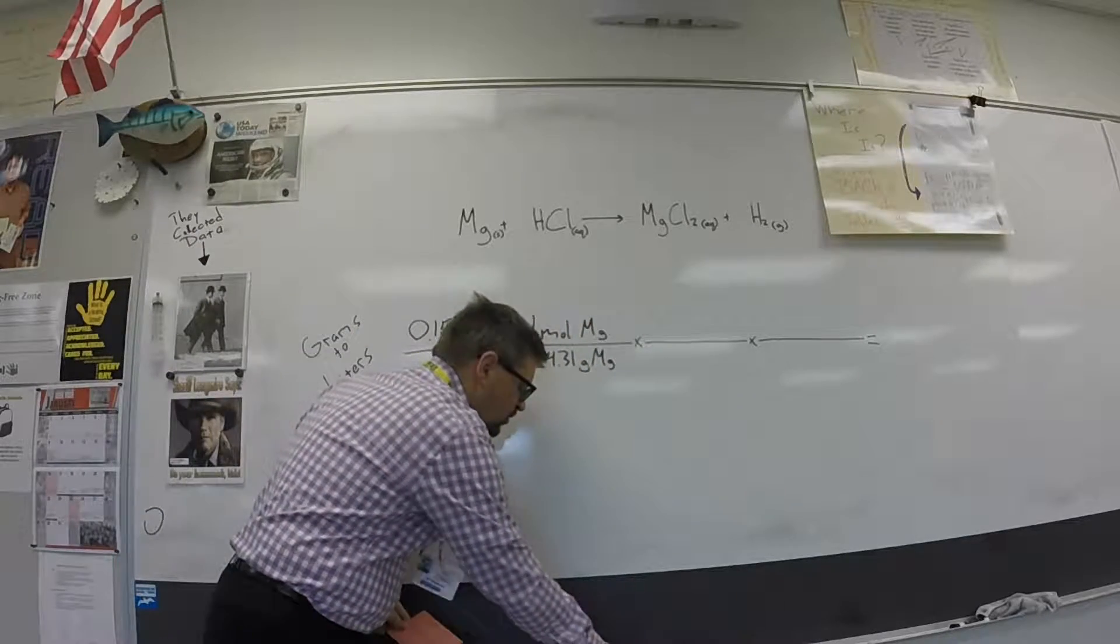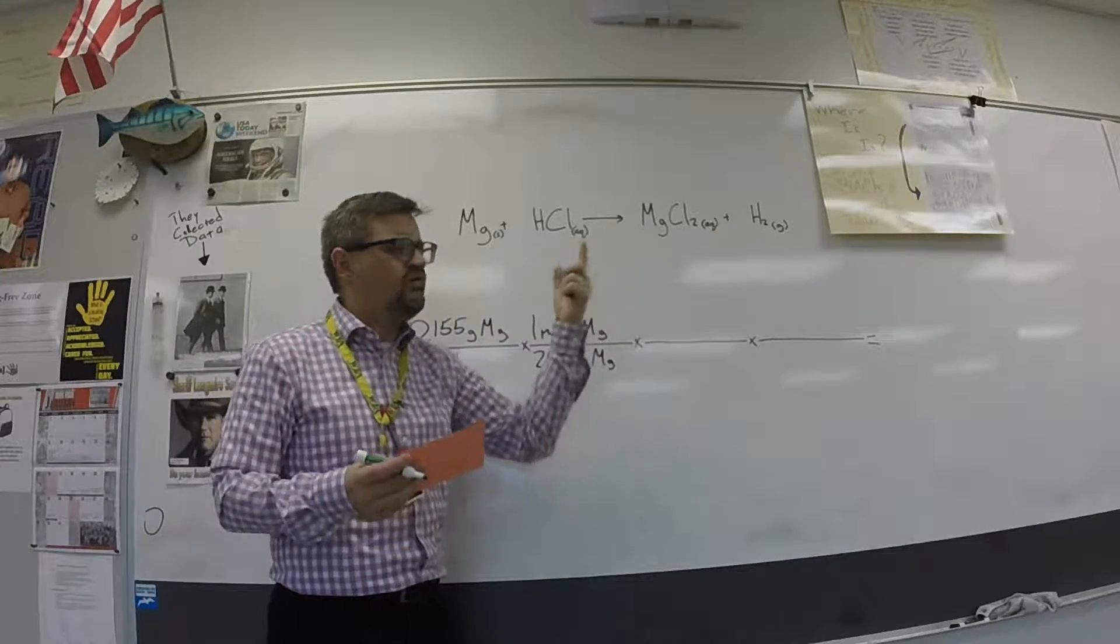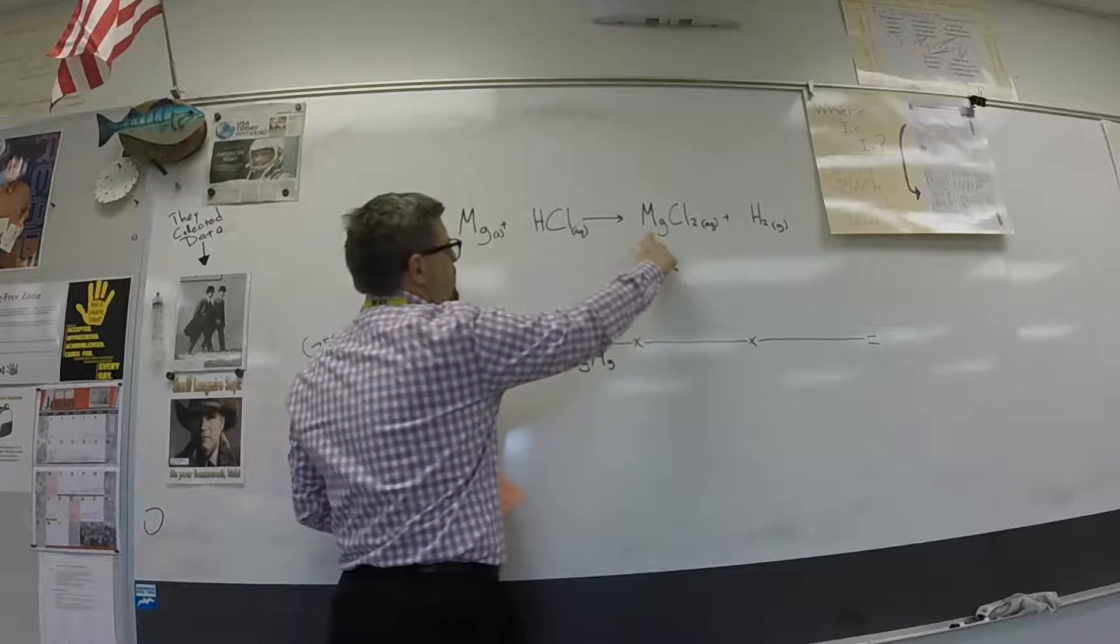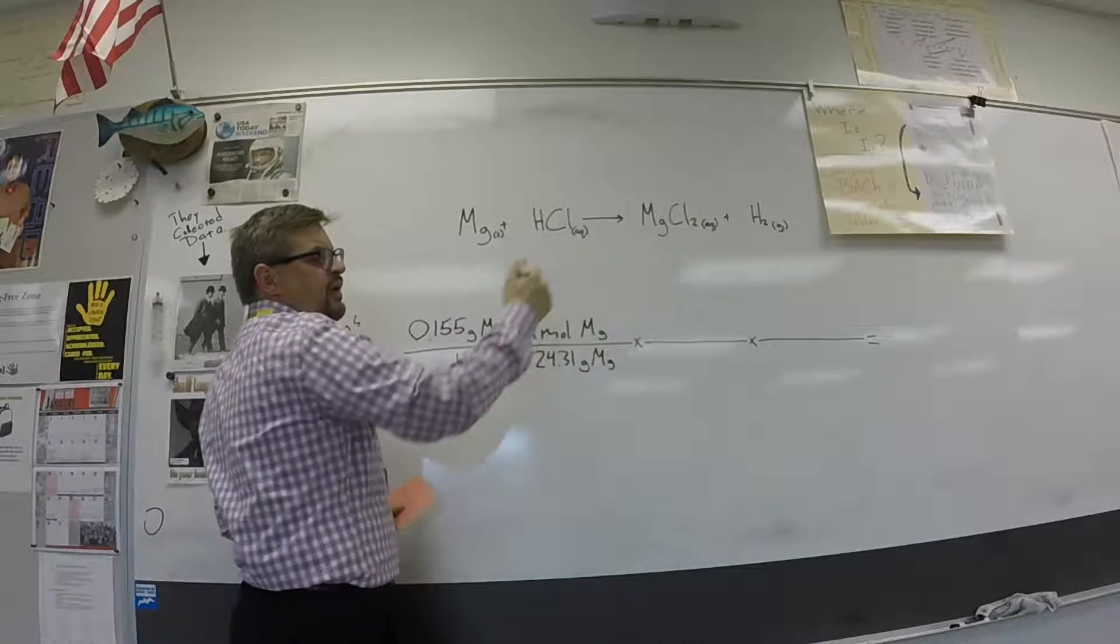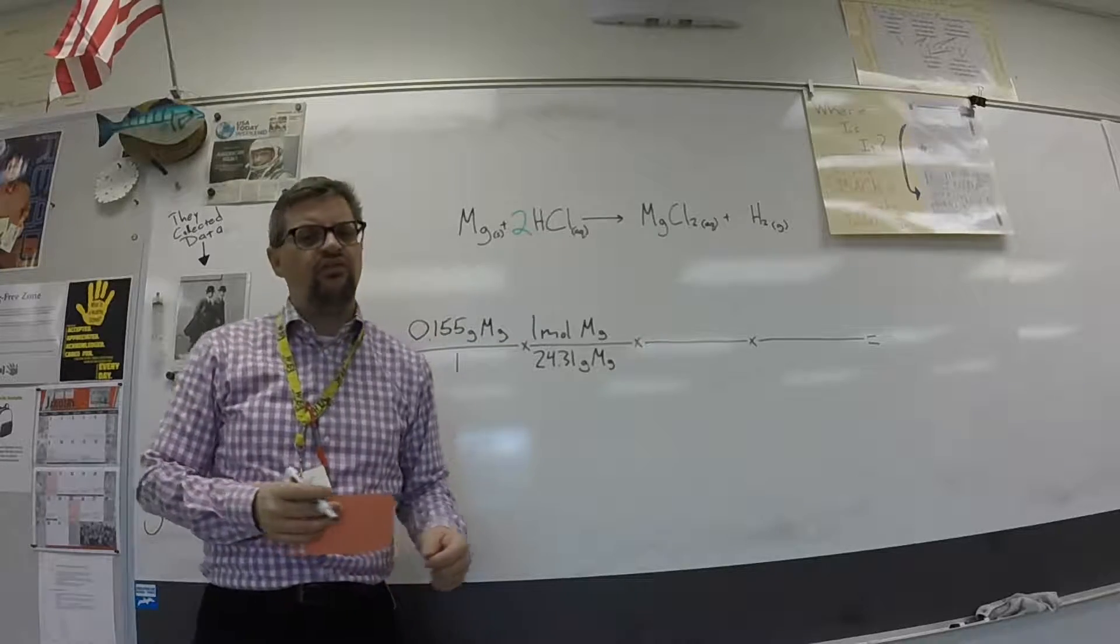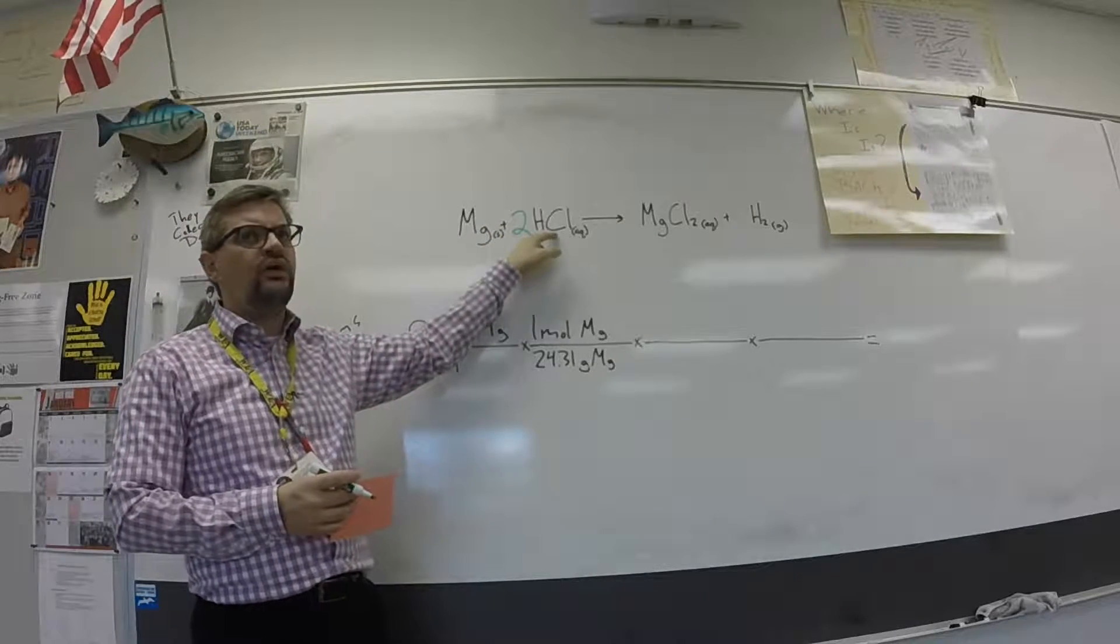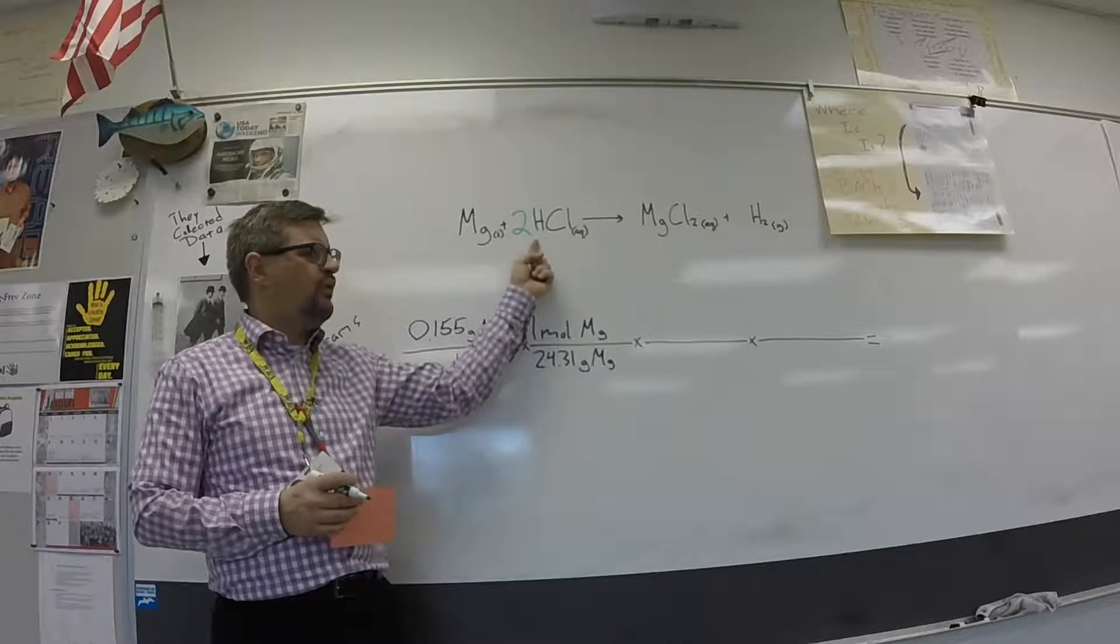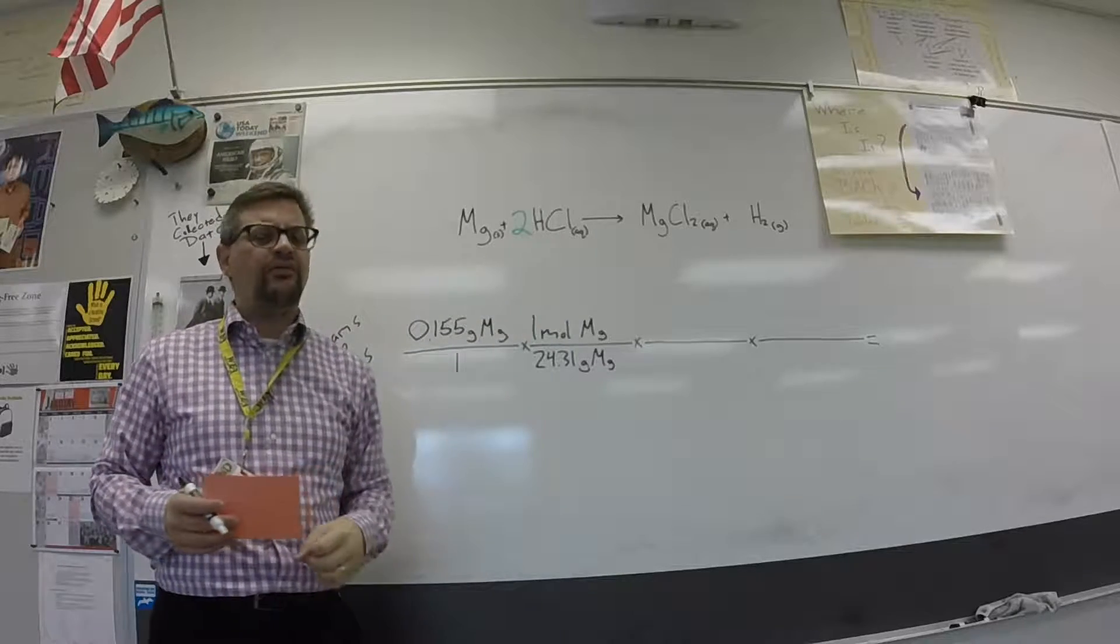Now in our next step, our numbers are going to come directly from our chemical equation, from our balanced equation. Which if we balance this equation, and we need to do that, we have one magnesium here, one magnesium here. We have two chlorines and two hydrogens here. We only have one of each here. So to balance this equation, pretty simple, we'll put a two in front of the hydrochloric acid. And what that tells us is that in the reaction, magnesium reacts with hydrochloric acid in a one-to-two ratio. So for this next fraction, we're going to use numbers, our coefficients from the balanced equation.